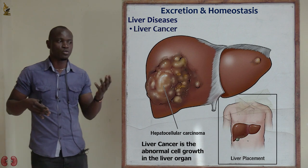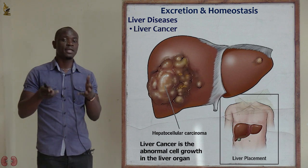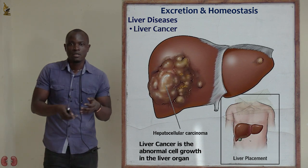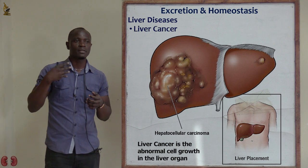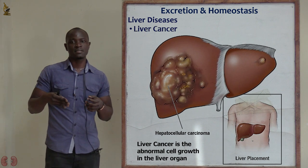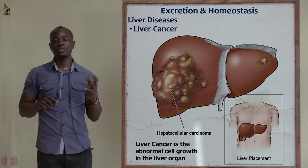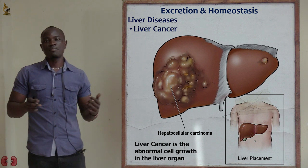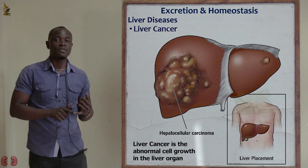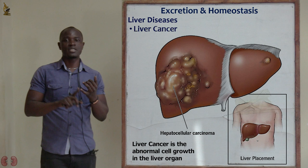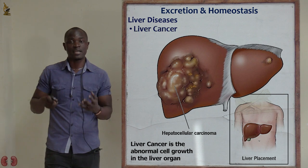If you mention hepatocellular carcinoma to any medical personnel, it means cancer of the liver. Hepatocellular carcinoma is basically the abnormal growth of cells in the liver. This abnormal multiplication causes the liver to malfunction — it will not produce enough bile and cannot undertake its normal functions, because the liver is sick and not functioning appropriately.